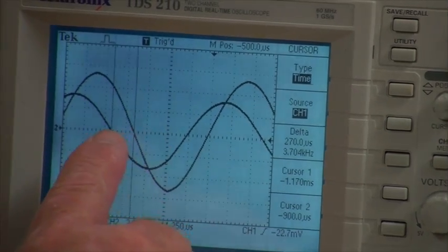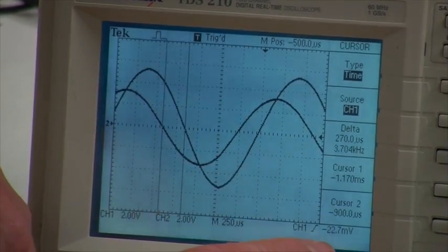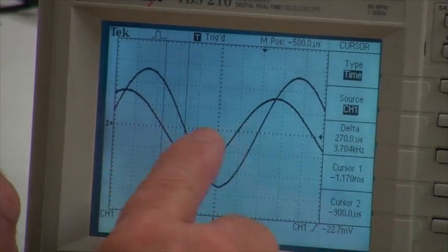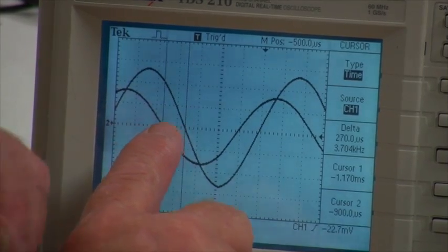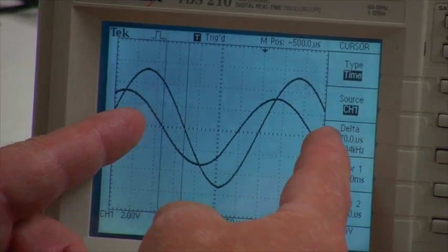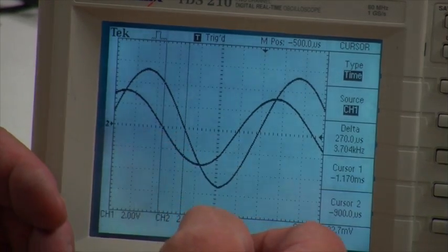So this phase time, if you want to express the phase shift in degrees, you simply say that the ratio of this phase time to the period of the signal is the same as the ratio of this phase angle to 360 degrees.